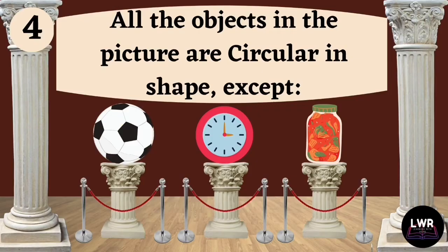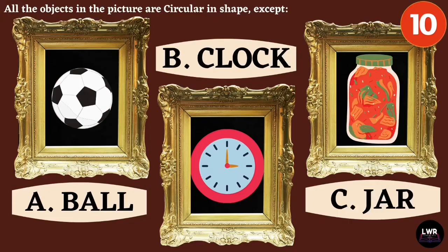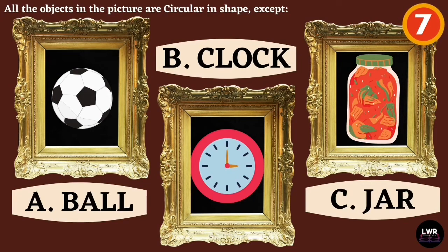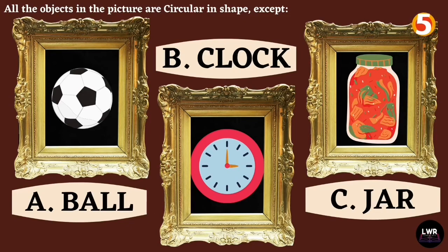Question number four. All the objects in the picture are circular in shape except... Letter A, ball. Letter B, clock. Or letter C, jar.